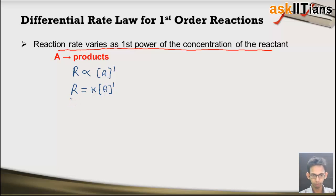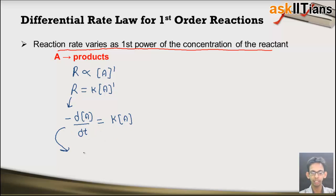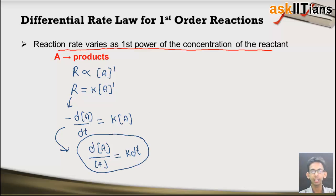The rate can be expressed as the decrease in concentration of reactant with time — hence the negative sign, because the concentration of reactant decreases. This equals k times the concentration of A. Rearranging, we get dA divided by A equals negative k dT. This form of the rate law is known as the differential rate law for first order reactions.